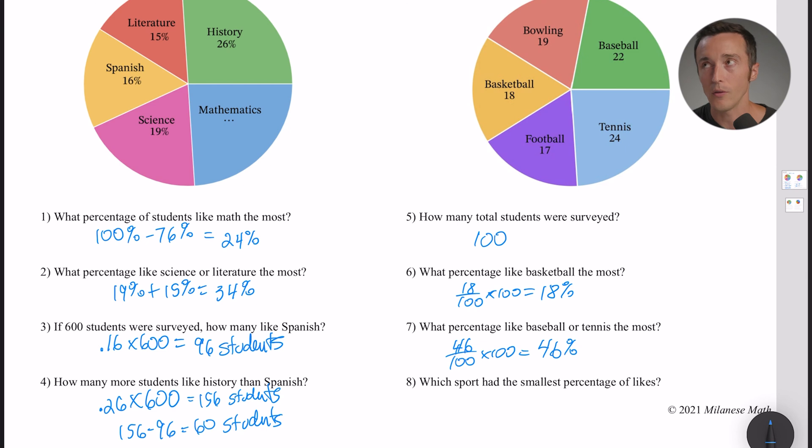So as you can see, some of these questions, even though it's a pie chart or a circle graph, they don't actually give you the percentages and they ask you to calculate them. So again, just keep that in mind. How about number eight - which sport had the smallest percentage of likes? Well, you could convert each one of those to a percentage, or you could just glance at them and notice that the smallest number up there is football. So obviously as a percentage it's also going to be the smallest, so the answer would be football.